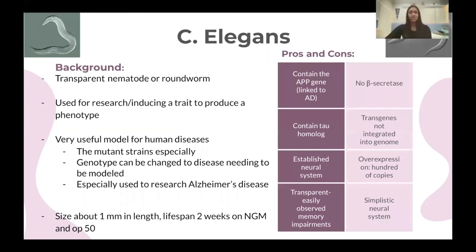C. elegans are a transparent roundworm essential for research to induce traits needed. They're used to model diseases like Alzheimer's. Some pros of C. elegans are that it contains the APP gene, the TAU homolog, has a neural system, and is transparent for easy observation. Some cons of C. elegans are that it doesn't contain B secretase, the transgenes aren't fully integrated into its genome, there can be overexpression, and its neural system is very simplistic.